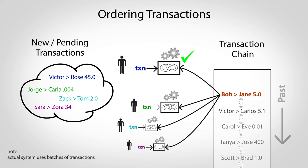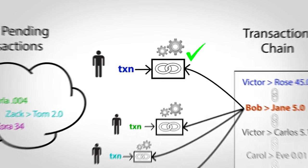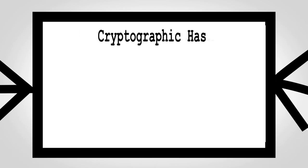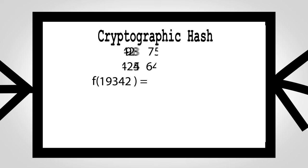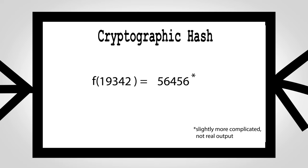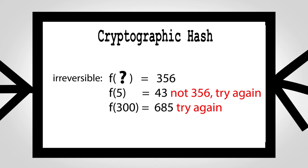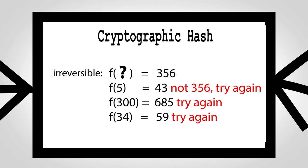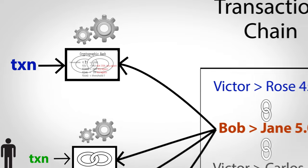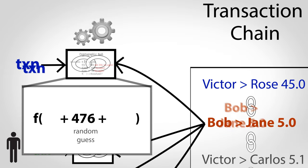The first person to find a solution wins and gets to have their transaction selected as next in the chain. So what's this linking problem? It's based on a special function called a cryptographic hash. It just mixes up its inputs and spits out a number, but it's special because it's irreversible — there's no easy way to start with an output and find an input that generates it other than by making lots of guesses. This is literally what people are doing in Bitcoin: feeding this function random numbers until the output meets certain criteria. Besides a random guess, you also input a transaction from the pending pool and chain, which is where the linking part comes in.